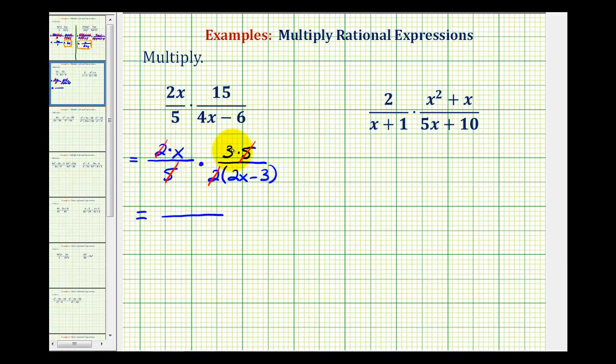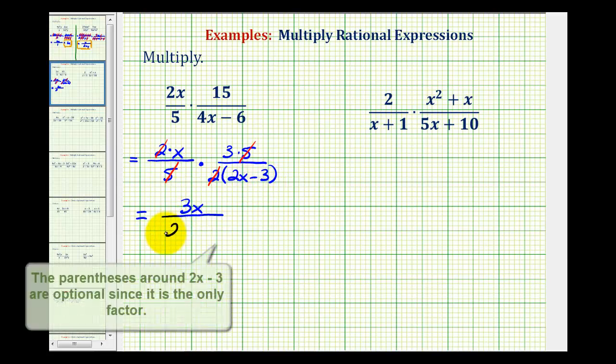The numerator would be x times 3, or 3x, and the denominator is just the quantity 2x minus 3. And again, while it may be tempting to try to simplify something else here, we cannot because of the subtraction.